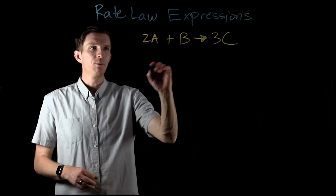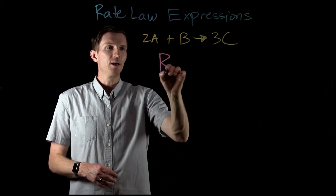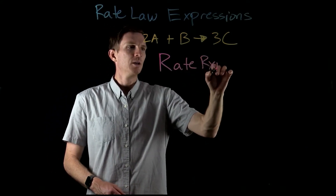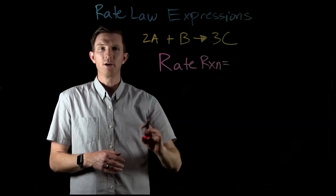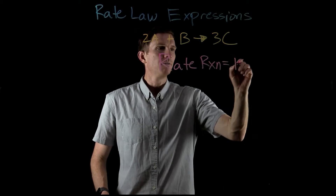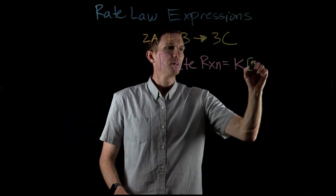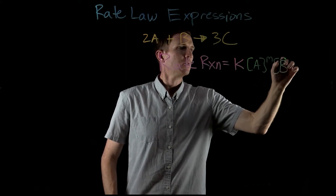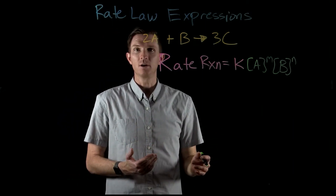We want to quantitate these, and we do that by taking our reaction and saying our rate of reaction is equal to the variables that will affect this reaction rate. We're going to have our rate constant multiplied by the concentration of our reactants to some power, and we'll describe what each of these pieces are.